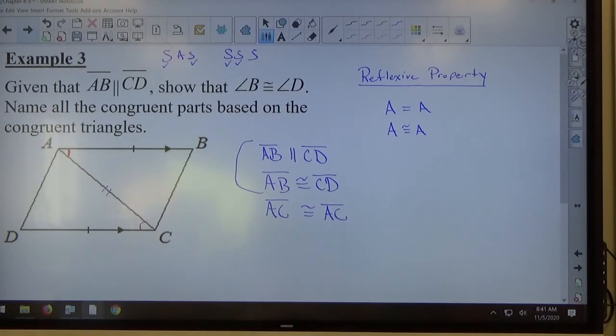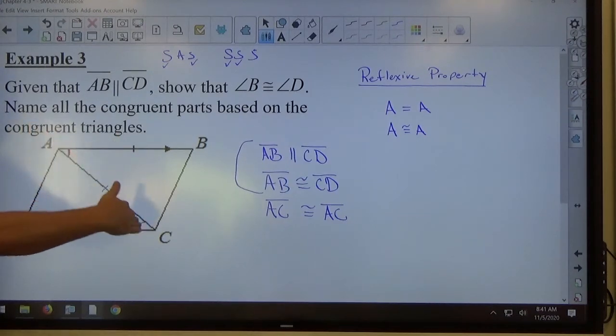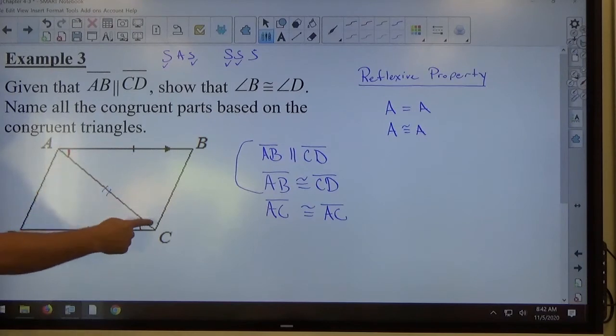What is it playing? Alternate interior angles. Alternate interior angles. Here we have parallel lines cut by a transversal. Angle BAC and angle ACD are alternate interior angles, so they should be congruent. So I know that angle BAC is congruent to angle ACD.